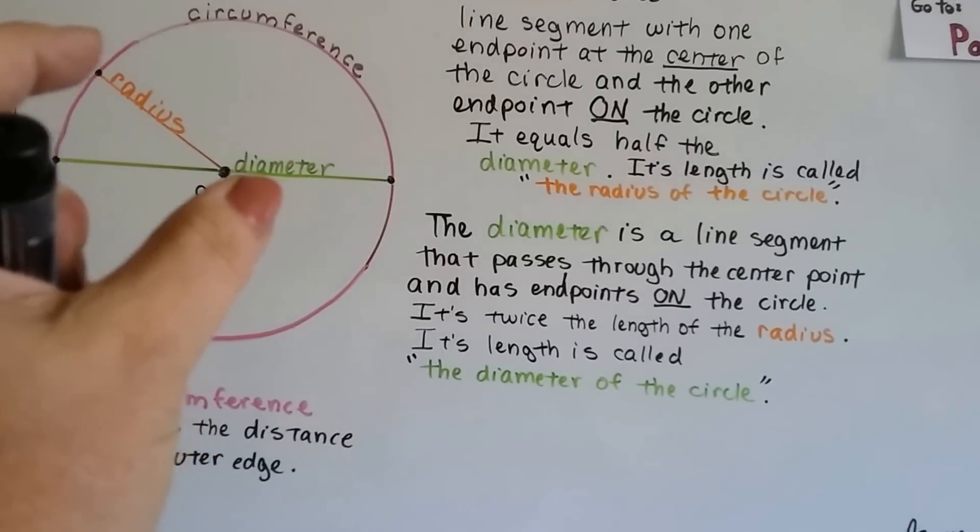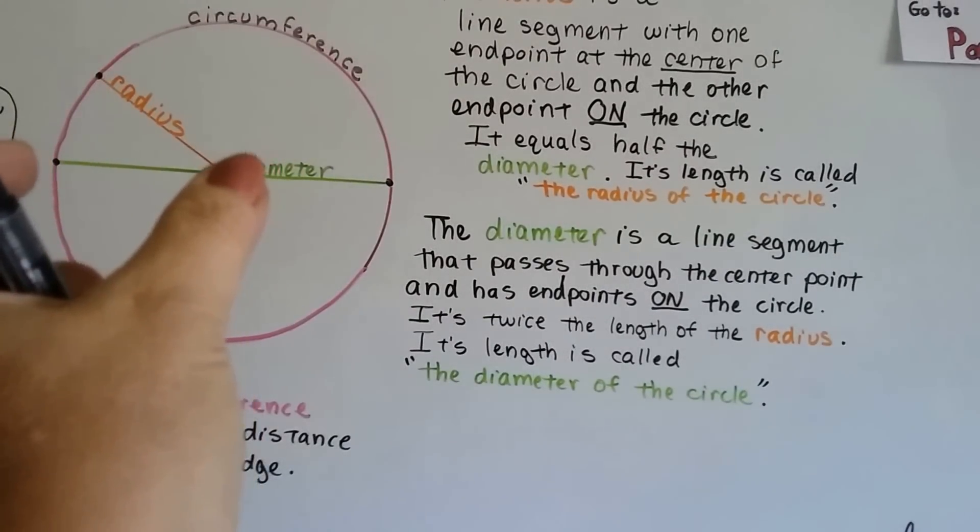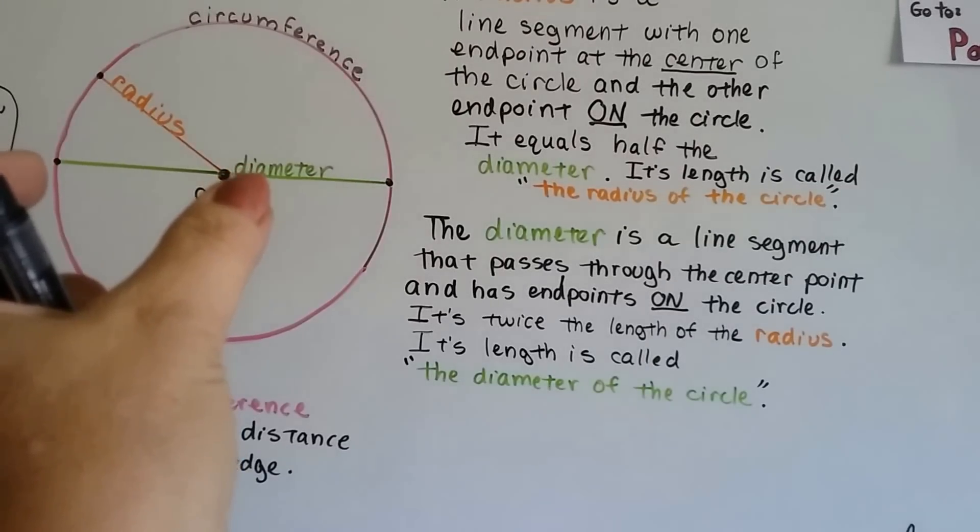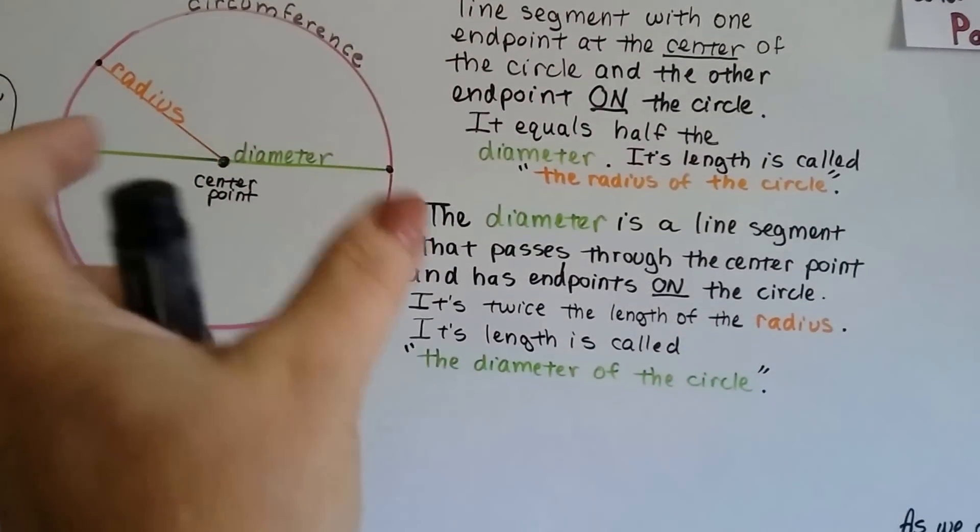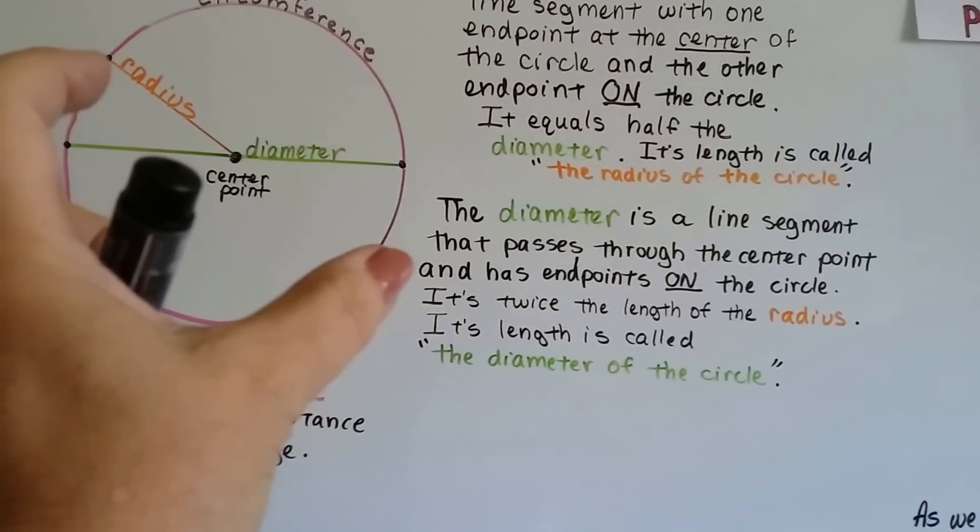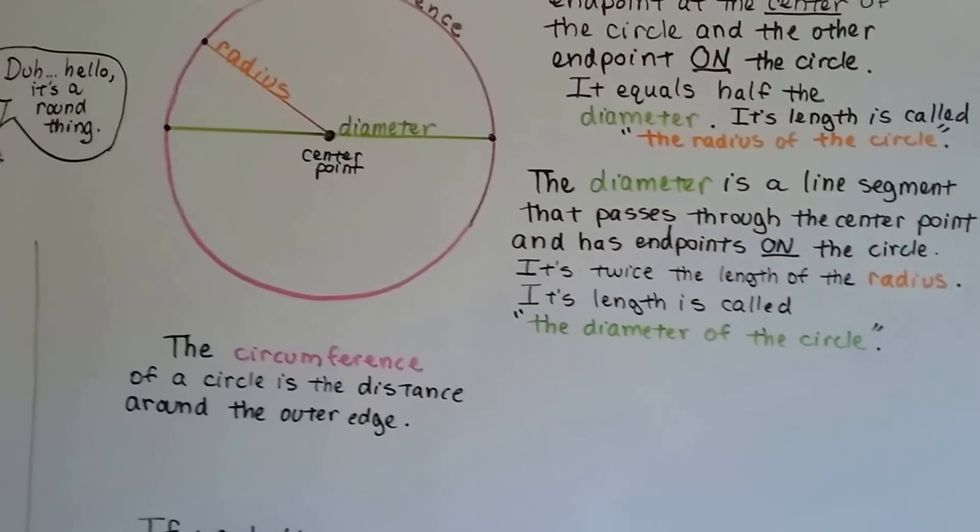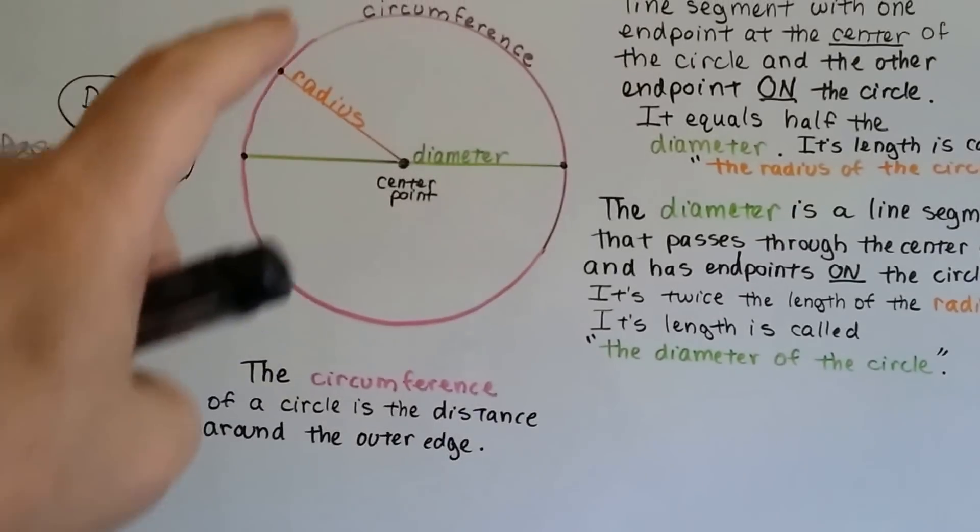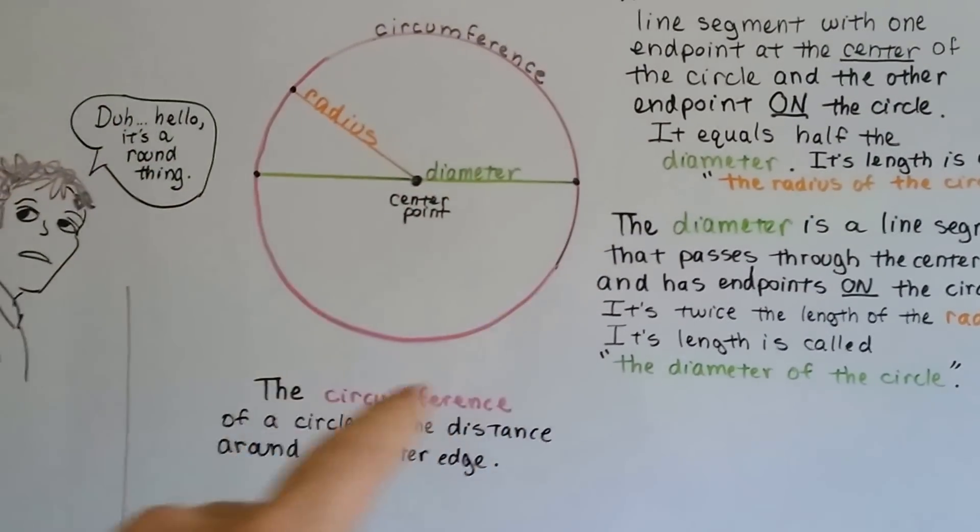So a radius is half of a diameter, and a diameter is two radii. The circumference of a circle is the distance around this outside edge. That's the circumference.